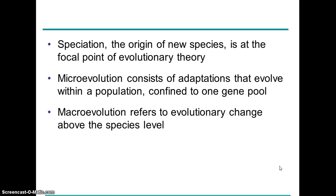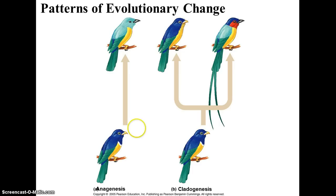This is in contrast to the previous chapter on microevolution, in which we were talking about a single population or species just changing from one generation to the next, with allele frequencies changing. In macroevolution, we're talking about a longer-term process in which we get new species forming, and there are different ways this can happen.